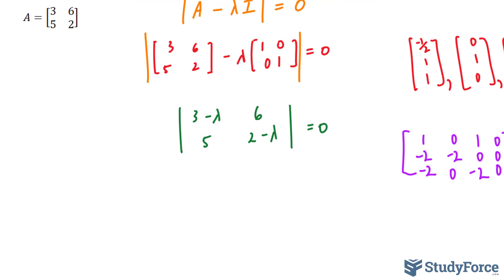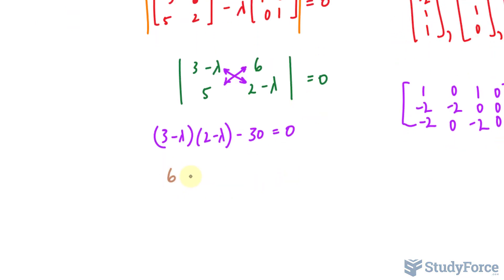To find the determinant of a 2 by 2 matrix, we first take the product of this diagonal and subtract it by the product of that diagonal. So we have 3 minus lambda times 2 minus lambda minus 30 is equal to 0. As you can see, we have a binomial times a binomial. So we will expand. And we'll end up with 6 minus 3 lambda. Notice the arrows. Now lambda times 2. Negative lambda times negative lambda gives us positive lambda squared minus 30 is equal to 0.